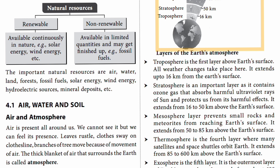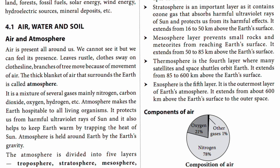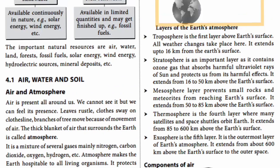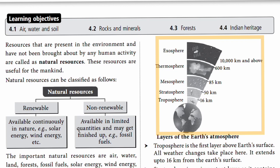The stratosphere extends from 16 to 50 kilometers above the earth's surface. The mesosphere prevents small rocks and meteors from reaching the earth's surface, and it extends from 50 to 85 kilometers. The thermosphere is the fourth layer, where satellites and space shuttles orbit the earth. It extends from 85 to 600 kilometers above the earth's surface.